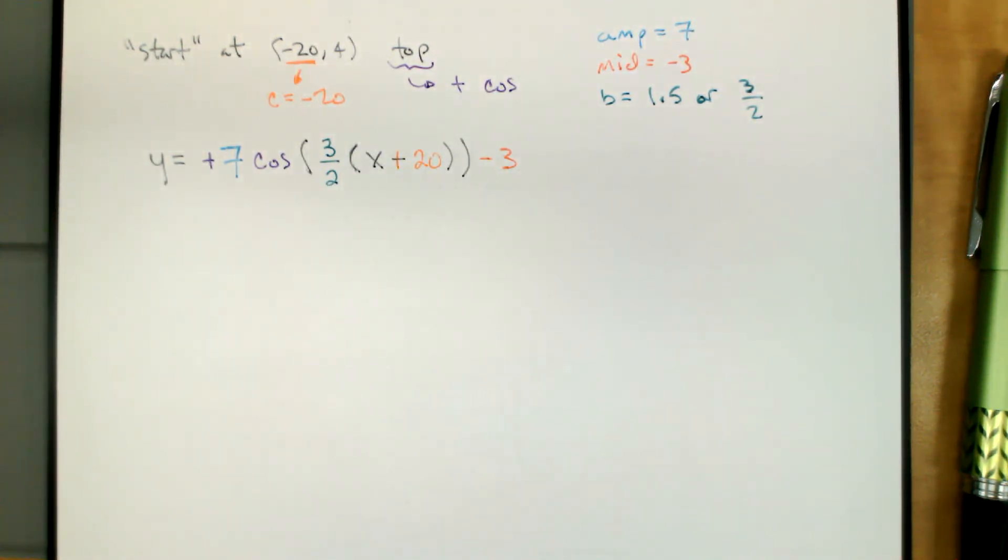Here's one possible equation for the function that we use. Amplitude of seven, period of 360 divided by 1.5, or 240. A horizontal shift of negative 20, and a vertical shift of negative three.